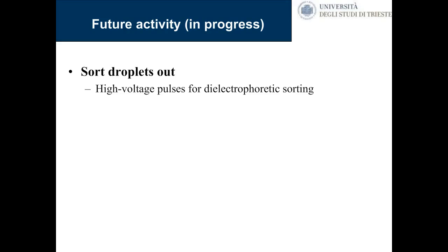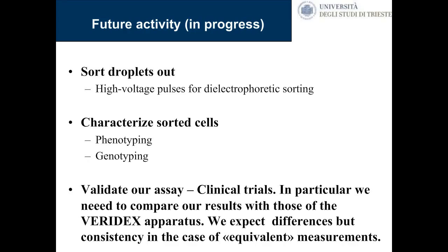We need to validate our approach with clinical trials. We need to compare our results with those of the Veridex apparatus, looking for spread differences but consistency in current measurements. Another group in my lab has analyzed blood from breast cancer patients slowly but very deeply to come to some conclusions about possible differences. We enrolled 130 patients initially but could complete only 60-65 because the grant was stopped.